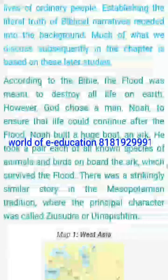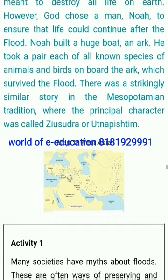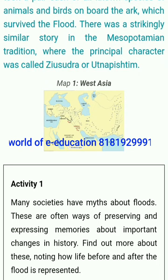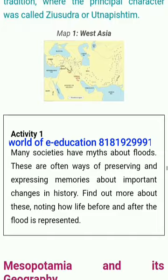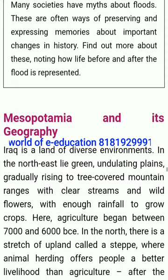According to the Bible, the flood was meant to destroy all life on earth. However, God chose a man, Noah, to ensure that life could continue after the flood. Noah built a huge boat — an ark — and took a pair each of all known species of animals and birds on board, which survived the flood. There was a strikingly similar story in the Mesopotamian tradition, where the principal character was called Ziusudra or Utnapishtim. Activity 1: Many societies have myths about floods — these are often ways of preserving and expressing memories about important changes in history. Find out more about these, noting how life before and after the flood is represented.